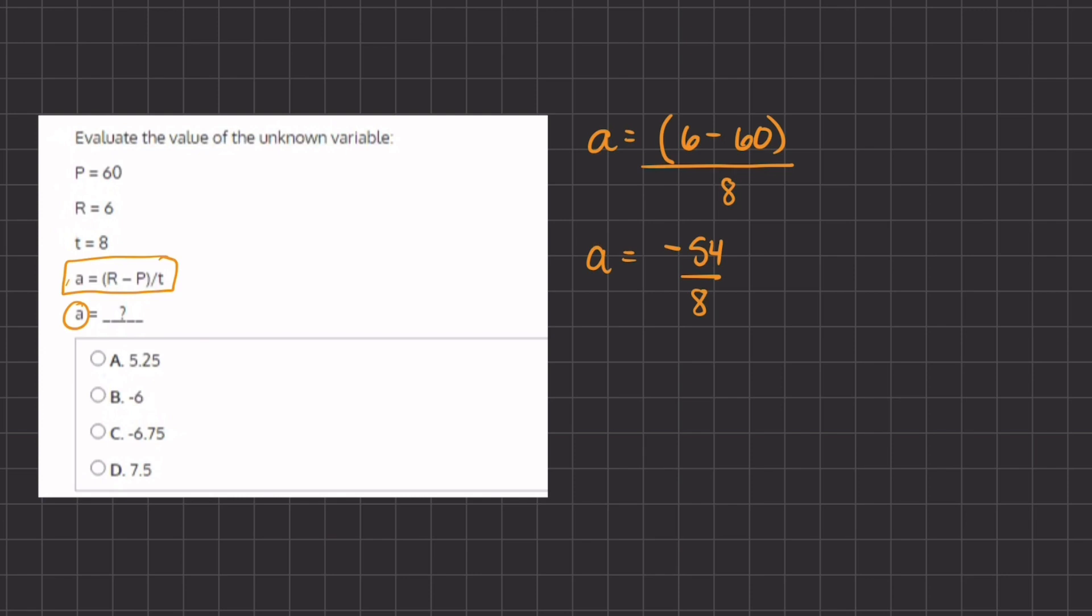Let's ask ourselves, how many times does 8 go into 54? That is going to be 6 times. So our whole number is going to be negative 6, remember because a negative divided by a positive gives us a negative.